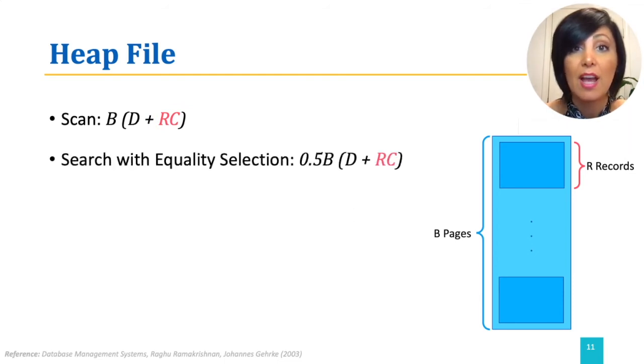We know that the distribution of the records in the file is uniform, as the records are stored in no particular order. If our search is unsuccessful, this means we scan the whole file, but we do not find a matching record. And therefore, the cost would be similar to the scan. However, if we are successful, given the uniform distribution, on average, we will scan half of the file to reach the desired record. And therefore, the estimated cost of the operation is half of that of scanning the heap file.